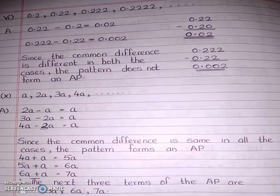Here, which is the first term? The first term is 0.2. The second term is 0.22. As said before, you will calculate second term minus first term, third term minus second term, fourth term minus third term. Let us just see.